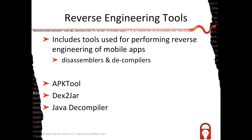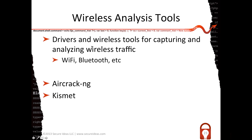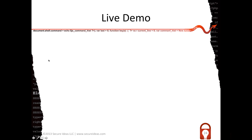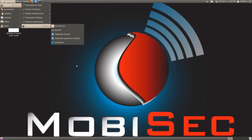For reverse engineering, we have disassemblers and decompilers: APK tool, Dex to JAR, and the Java decompiler. Dex to JAR is great for converting files to JAR format so you can decompile them. For wireless analysis, we have Aircrack-NG and Kismet — the key tools we need are already available.